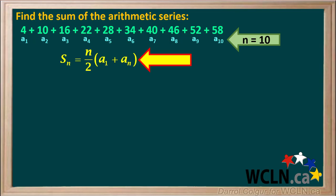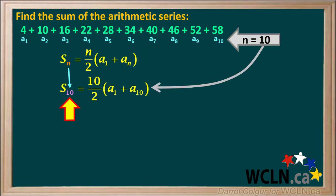We want to find the sum of this series, so we write down the formula Sn equals n over 2 times the sum of A1 plus An. Because n equals 10, we can substitute S10 for Sn, 10 for n here, and A10 for An in the equation here.